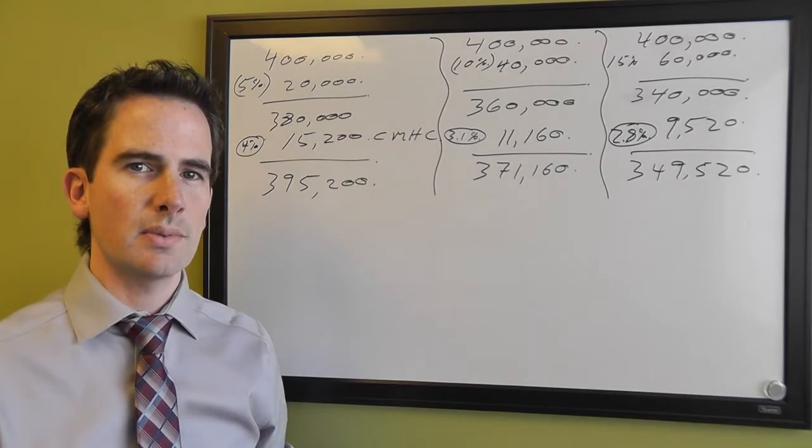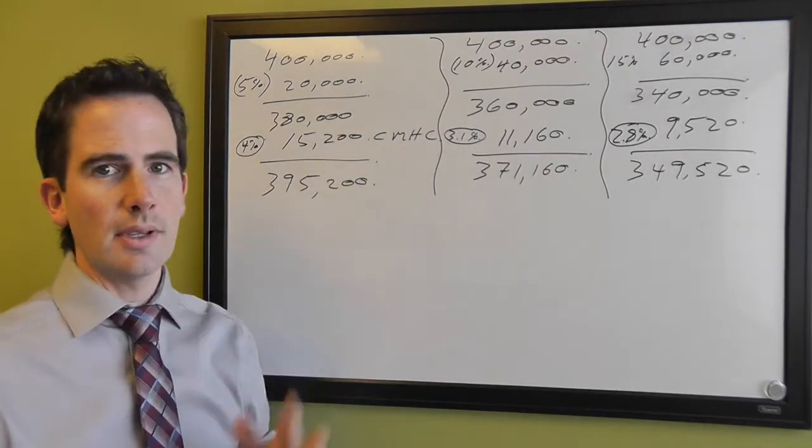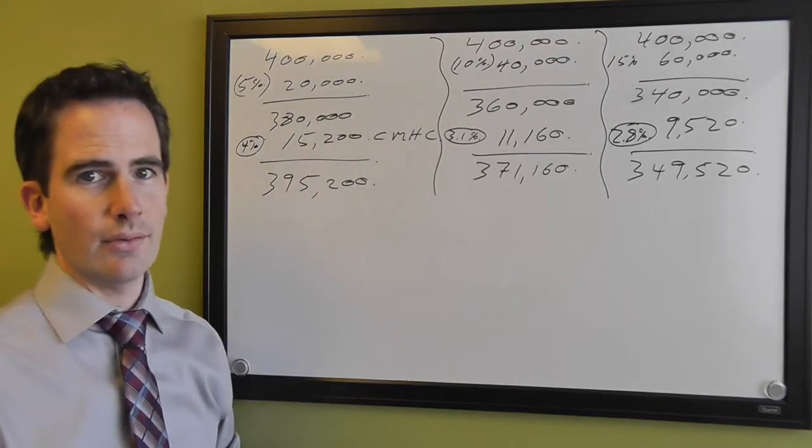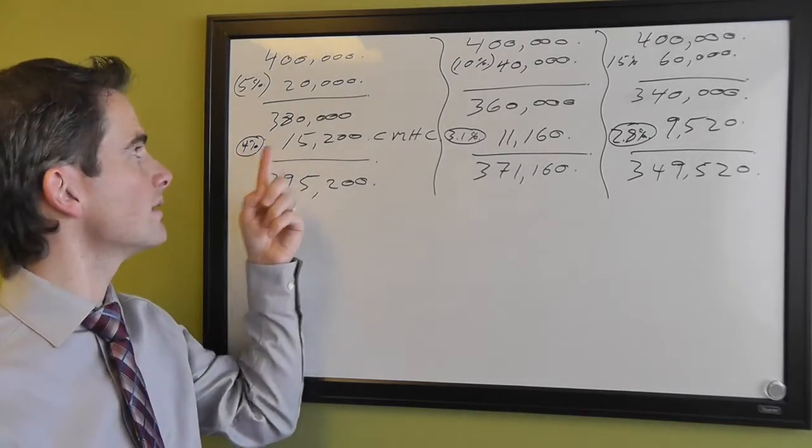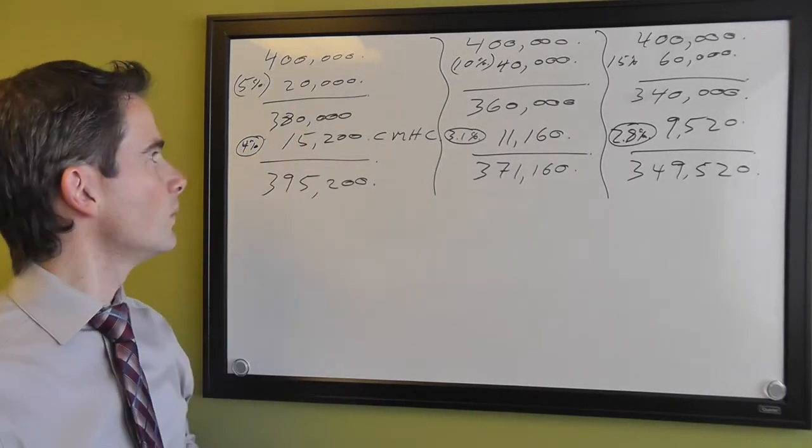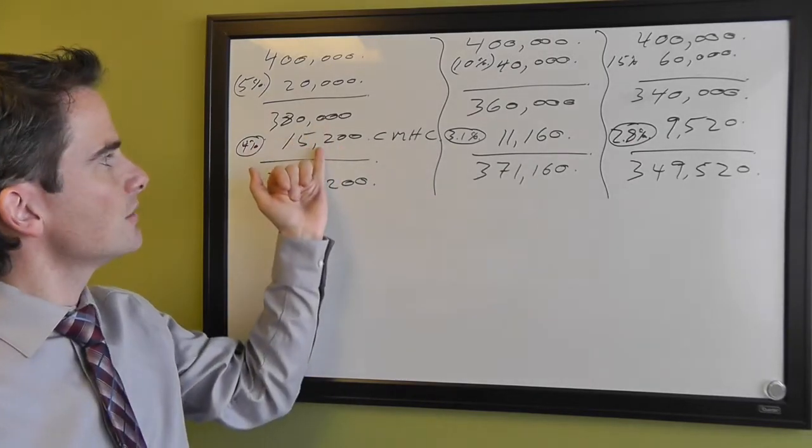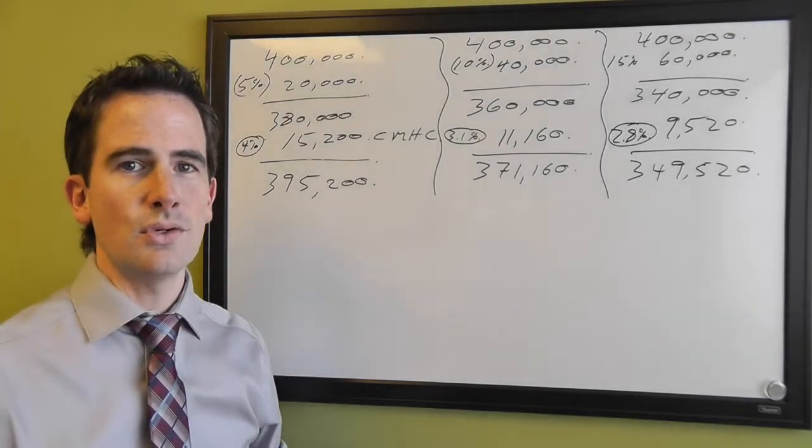So if you want to buy a house with less than 20% down, this is how you do it. There is a CMHC premium and that is a percentage of the mortgage amount. So if you're putting 5% down, the premium is based on 4% of the mortgage amount, which is $15,200. That gets added to the mortgage, which brings the mortgage amount to about $395,200.